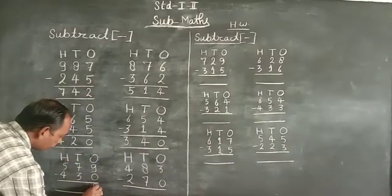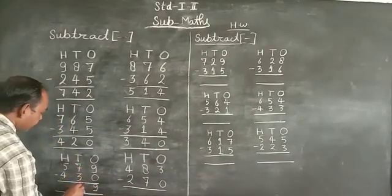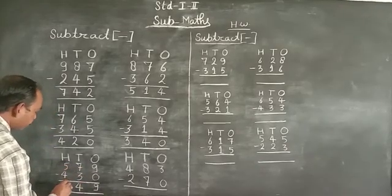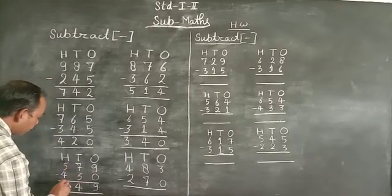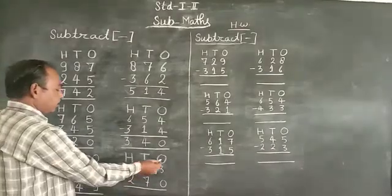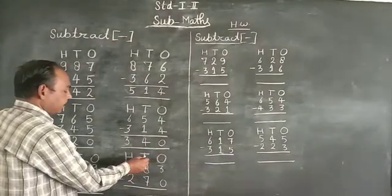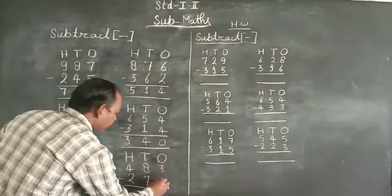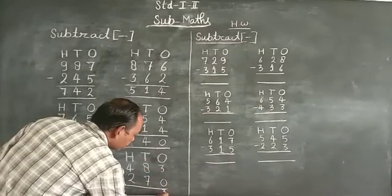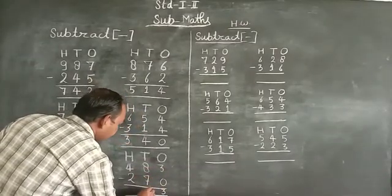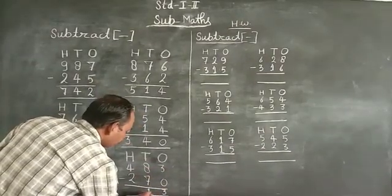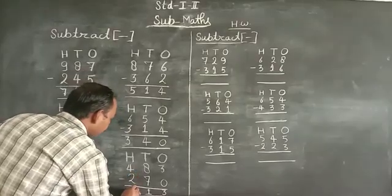Continuing: 9-0=9, 7-3=4, 5-4=1. Next set: 3-0=3, 8-7=1, 4-2=2.